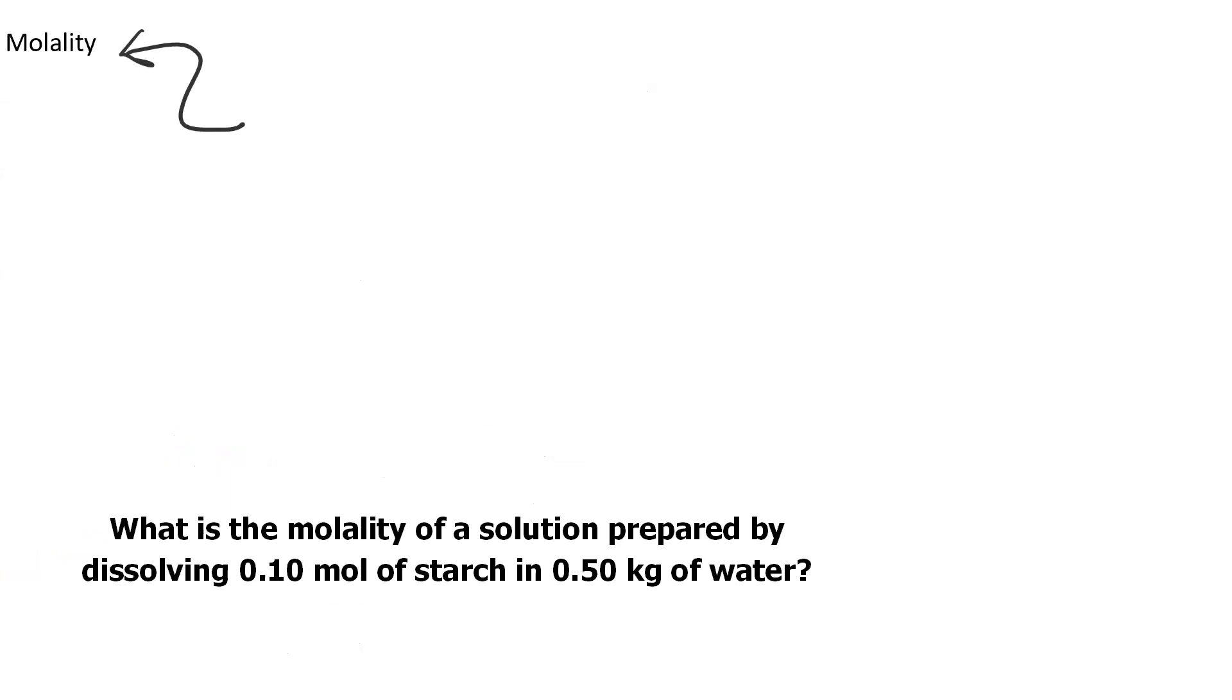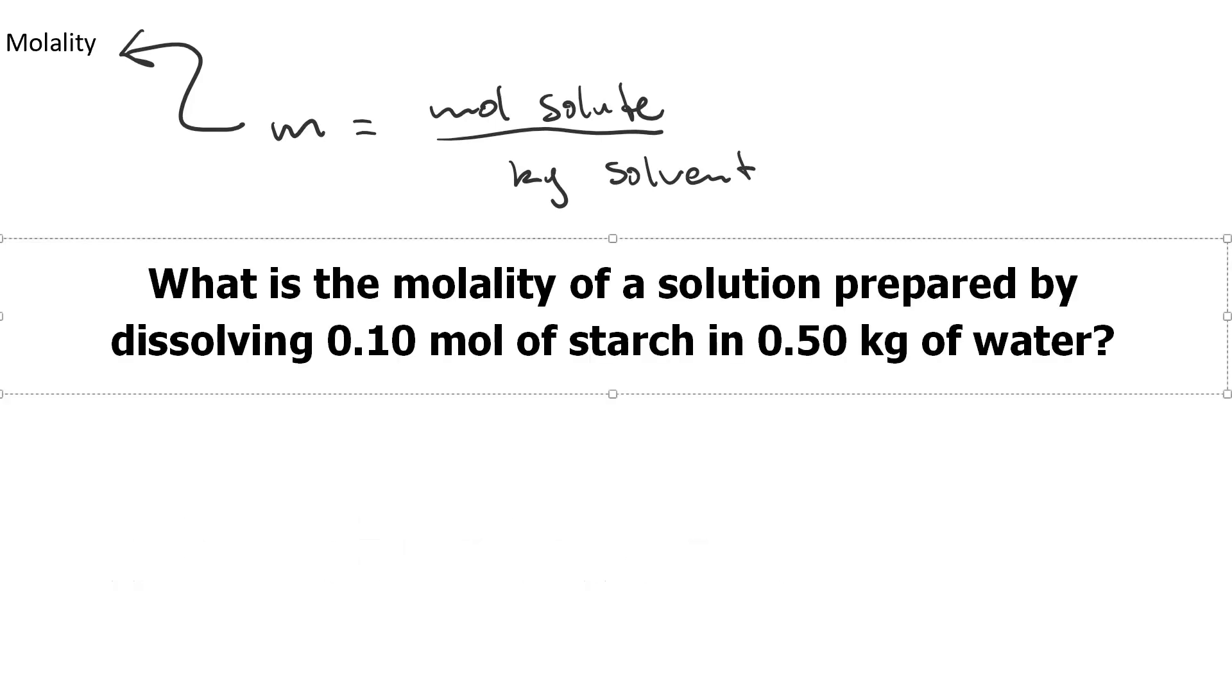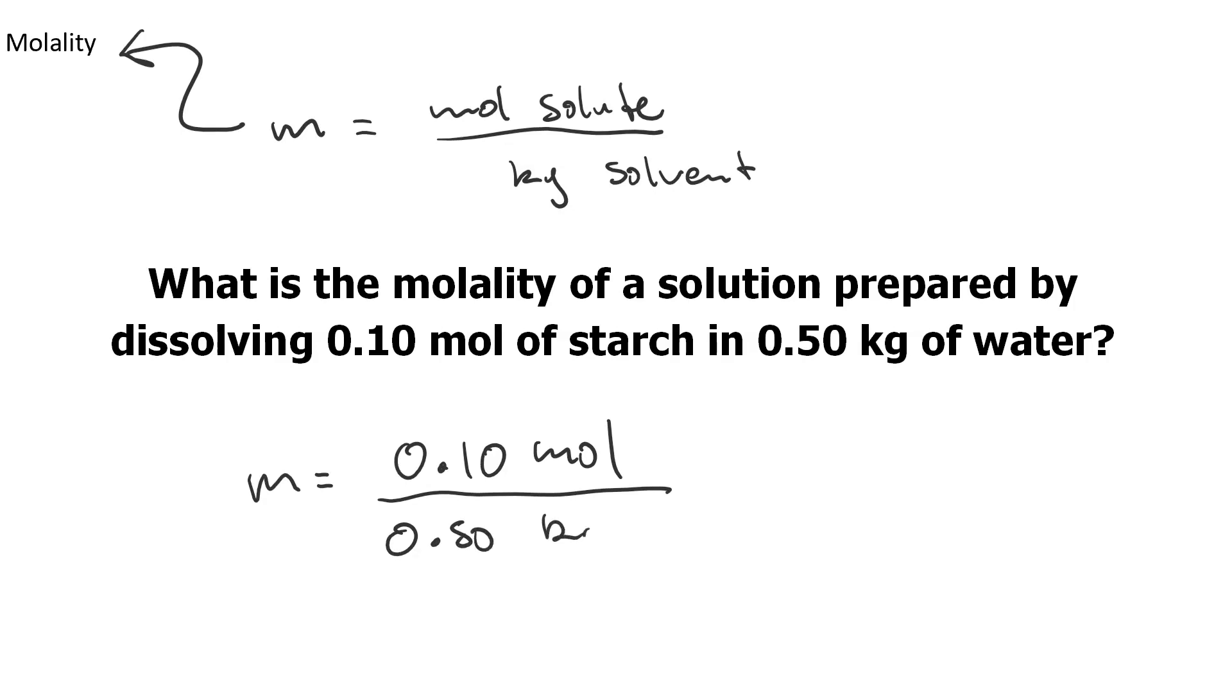For molality, we use m equals moles of solute per kilogram of solvent. So let's use that to solve this question. We're going to get molality equals 0.10 moles over 0.50 kilograms, which gives us 0.20 molal. It's a hard one to say.